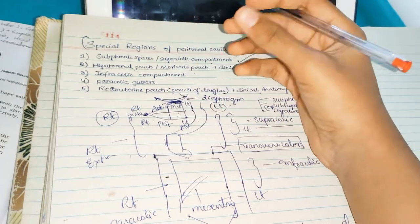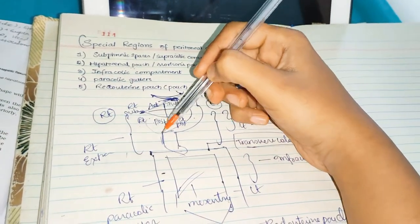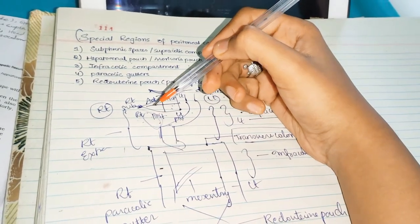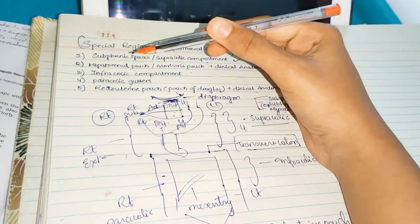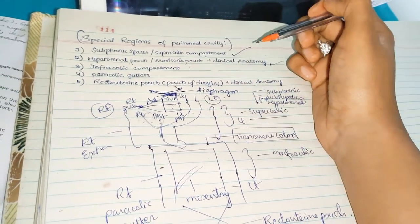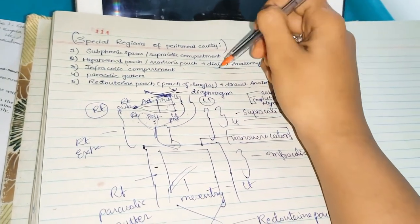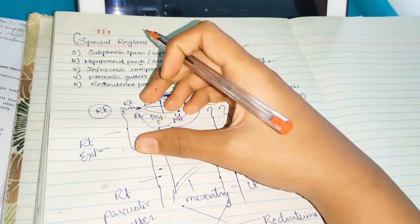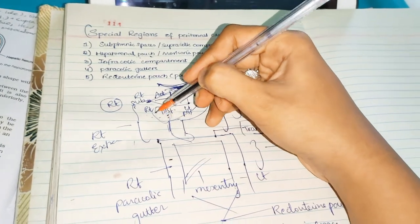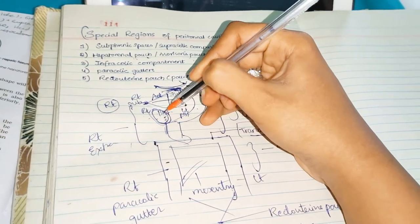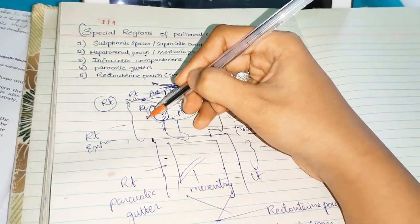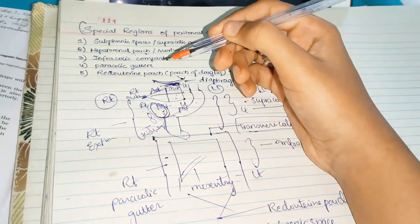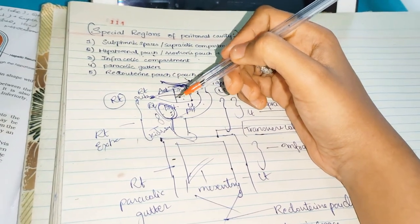The hepatorenal pouch is also called the right posterior compartment, which is the subhepatic space — also called Morrison's pouch. We should also discuss its clinical anatomy and boundaries. Here lies the hepatorenal pouch. Why is it called hepatorenal? On the posterior side you will have the kidney, so that is why it is called the hepatorenal pouch.